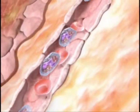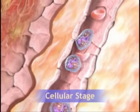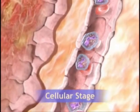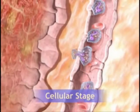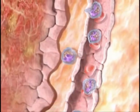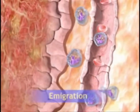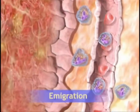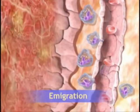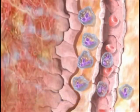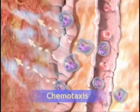The cellular stage of acute inflammation is initiated by the movement of phagocytic white blood cells, or leukocytes, into the area of injury. The leukocytes begin to adhere to the vessel wall and then, in a process called emigration, squeeze through the wall and move into the inflamed tissue. The leukocytes wander through the tissue guided by chemical signals in a process called chemotaxis.